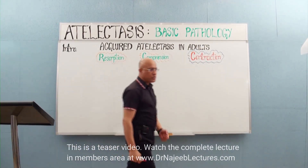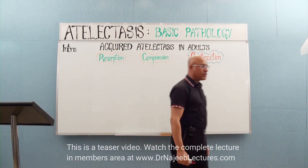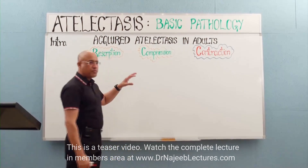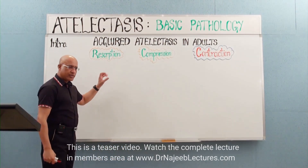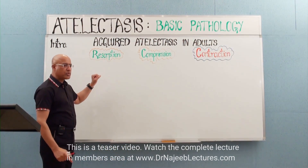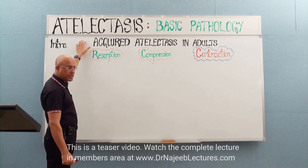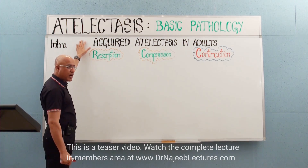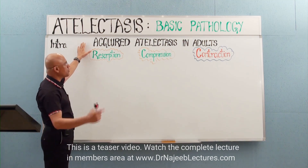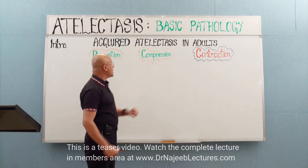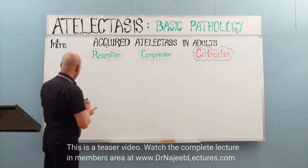Today we are going to start a series of lectures about the pathology of the respiratory system. The first topic I'm going to talk about is atelectasis — that is the collapse of part of a lung or a complete lung. Atelectasis is a very simple topic and we will only talk about its basic pathology.